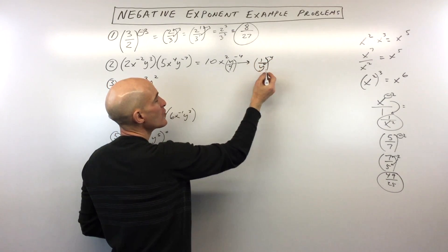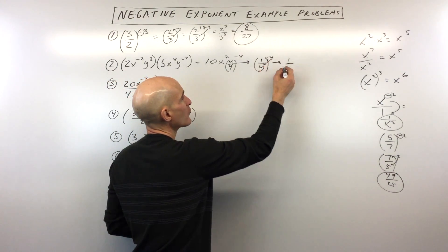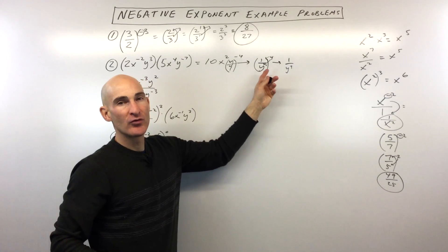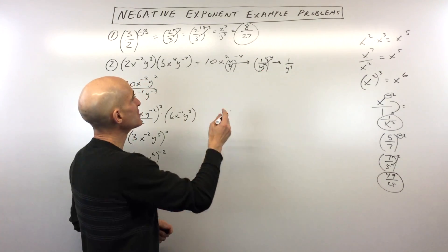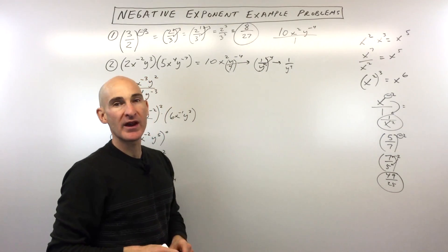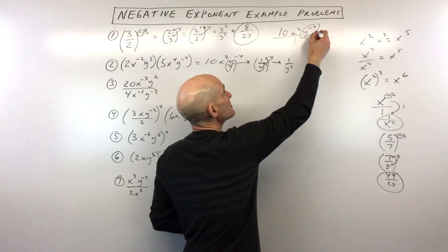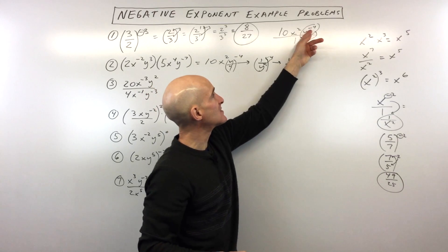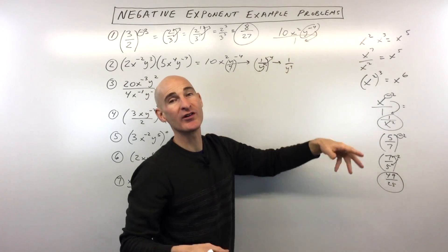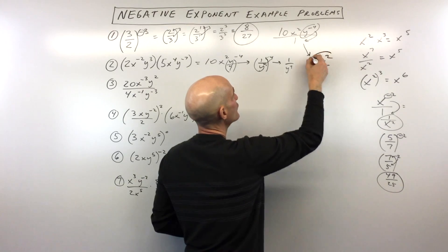When you have a fraction, you can raise both the numerator and the denominator to that power. So this is 1 to the fourth power, which is just 1, and then y to the fourth. There's really an understood 1 as an exponent there — power to power, we multiply. The shortcut is to rewrite this as 10x squared y to the negative fourth over 1 — anything divided by 1 is itself. When you see that negative exponent, you move it to the other side of the fraction bar and make it a positive exponent. So our final answer is 10x squared all divided by y to the fourth.